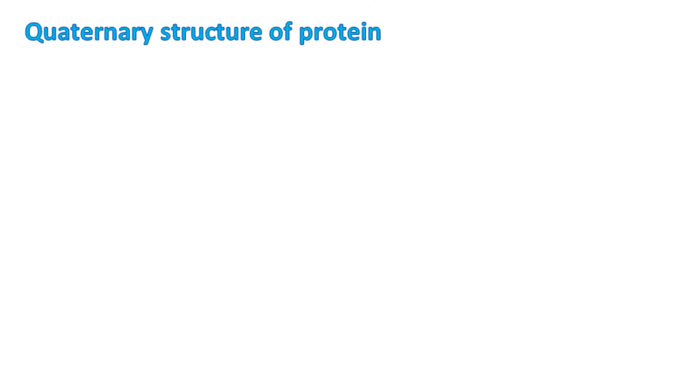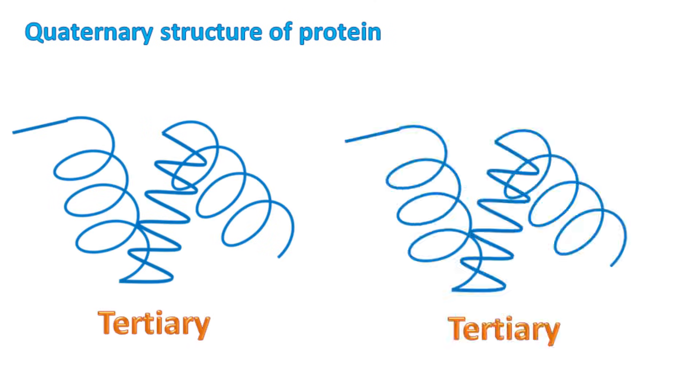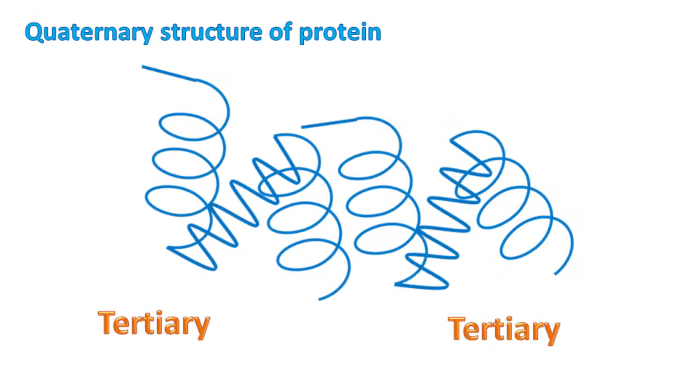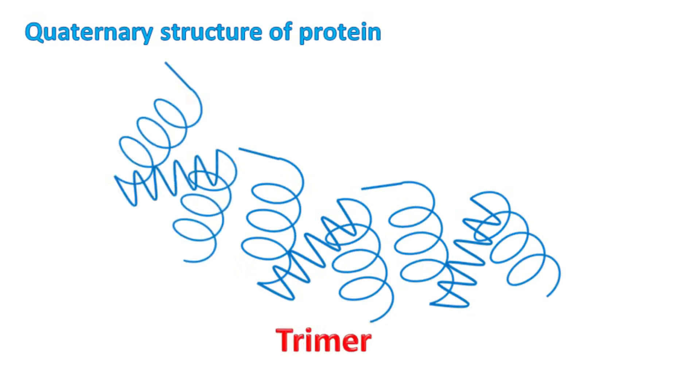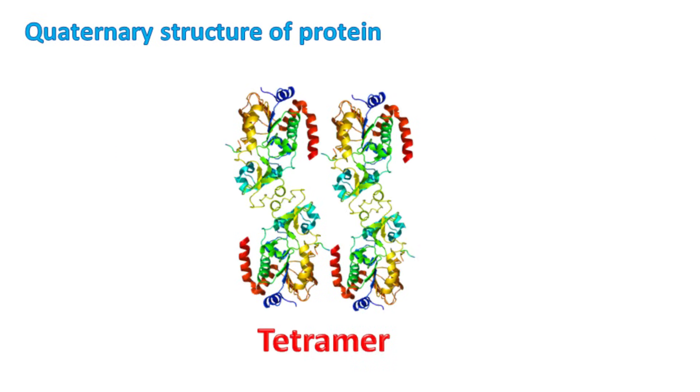Quaternary structure of protein. The protein having tertiary structure can further interact with other tertiary structure proteins to form dimers, trimers, tetramers and so on. The structure so formed is called quaternary structure. Most of the proteins in the cell have the quaternary structure.